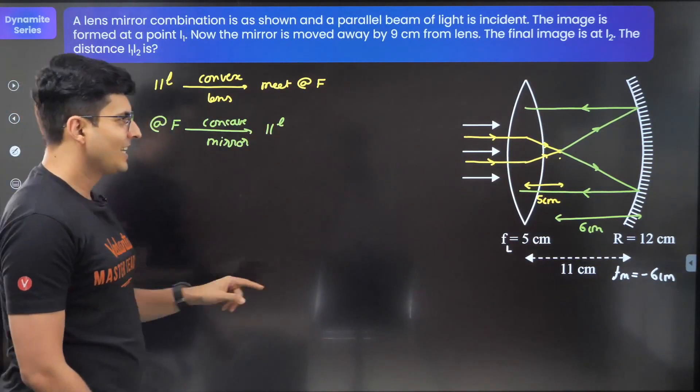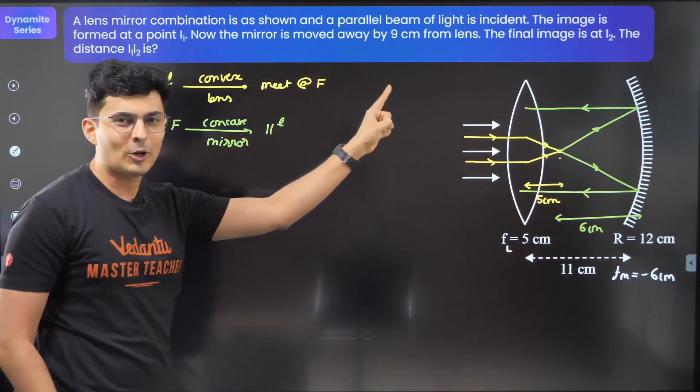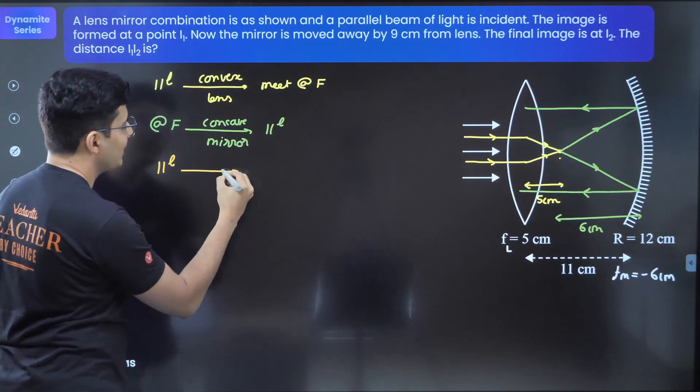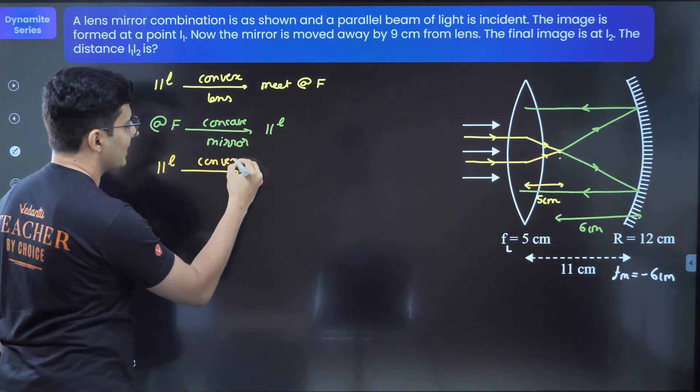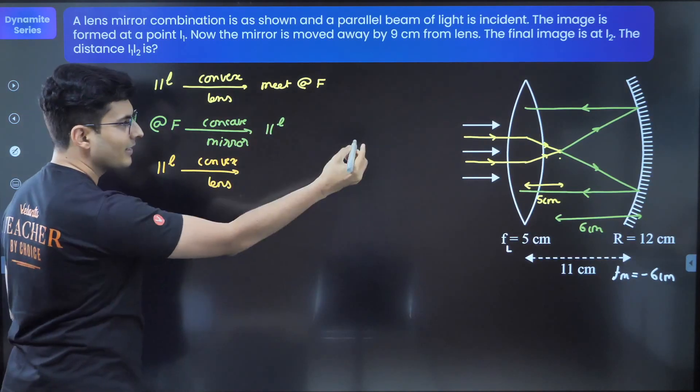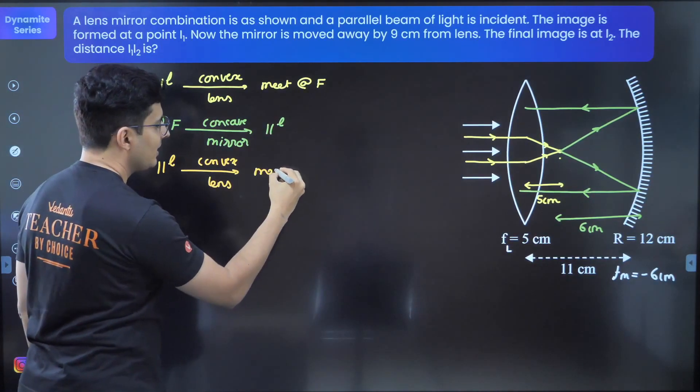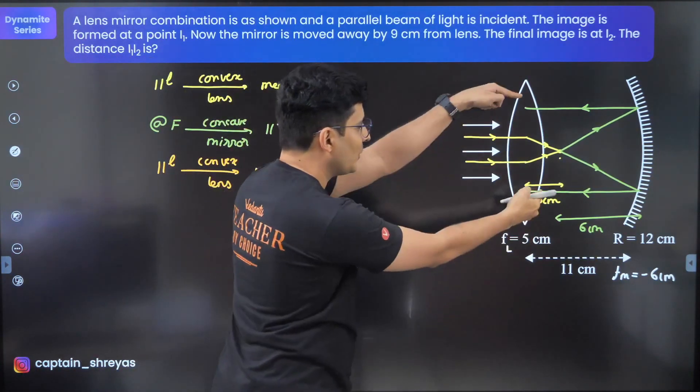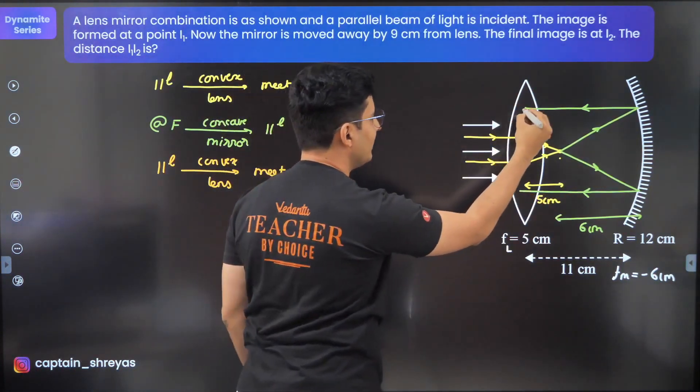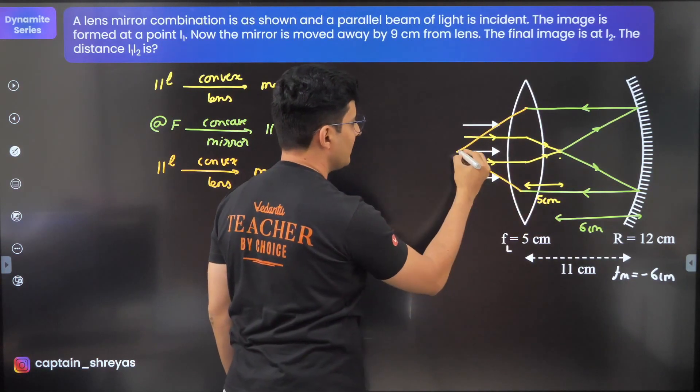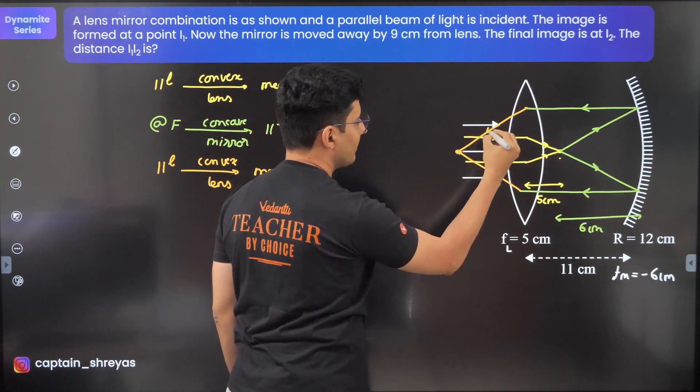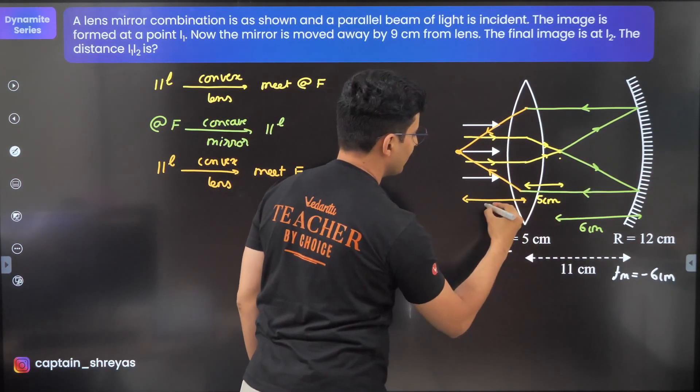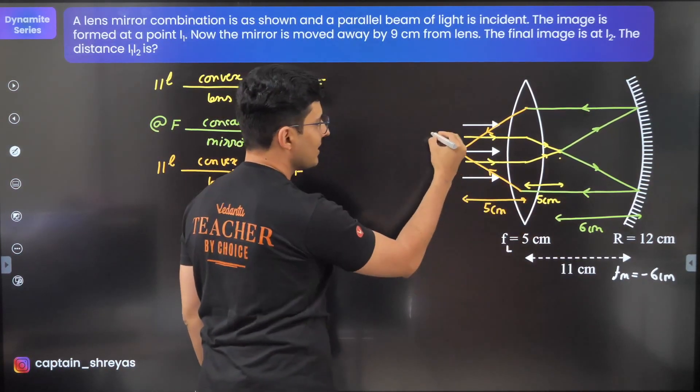Now I know what to do. The rays which are coming back parallel are incident on the convex lens again. If you have a parallel beam of light incident on a convex lens, after refraction it will definitely again meet back at the focus. It will meet on this side, so it meets right over here. This length is 5 centimeters and this point is I1.